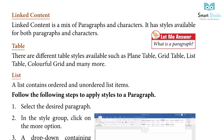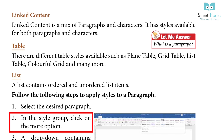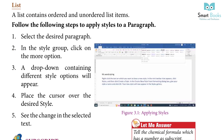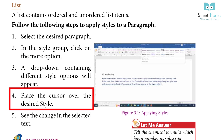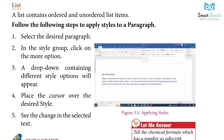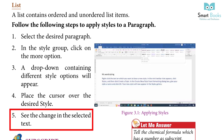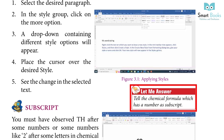Steps to apply styles to a paragraph: 1. Select the desired paragraph. 2. In the style group, click on the more option. 3. A dropdown containing different style options will appear. 4. Place the cursor over the desired style. 5. See the change in the selected text.